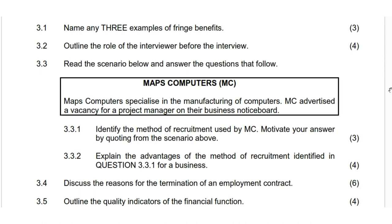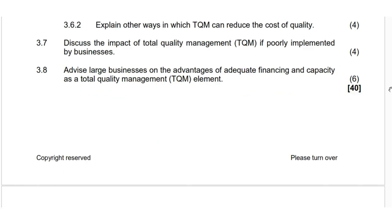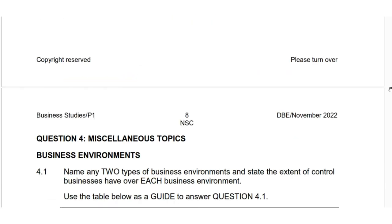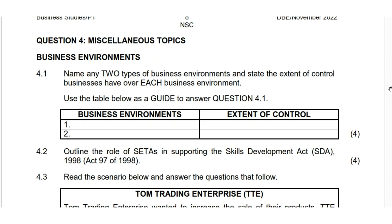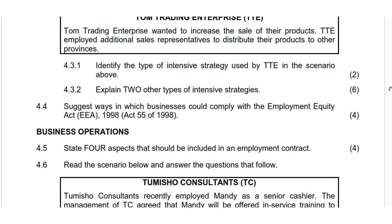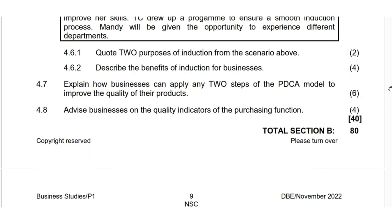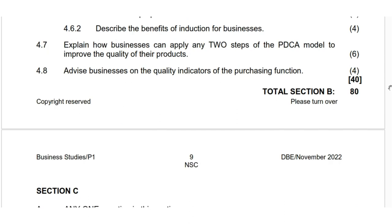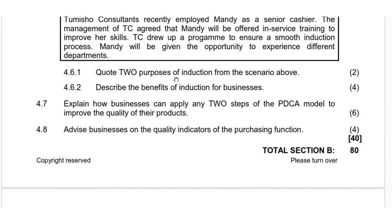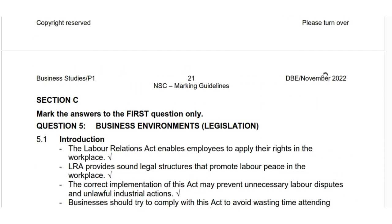For instance, command words like advise, name, state, outline, motivate, recommend, suggest, and list do not usually require much depth in candidates' responses — the mark allocation for each statement appears at the end. However, words like define, describe, explain, discuss, elaborate, distinguish, differentiate, compare, tabulate, analyze, evaluate, and critically evaluate require a greater depth of understanding, application, and reasoning. Therefore, marks must be allocated more objectively to ensure that assessing is conducted according to established norms so that uniformity, consistency and fairness are achieved.